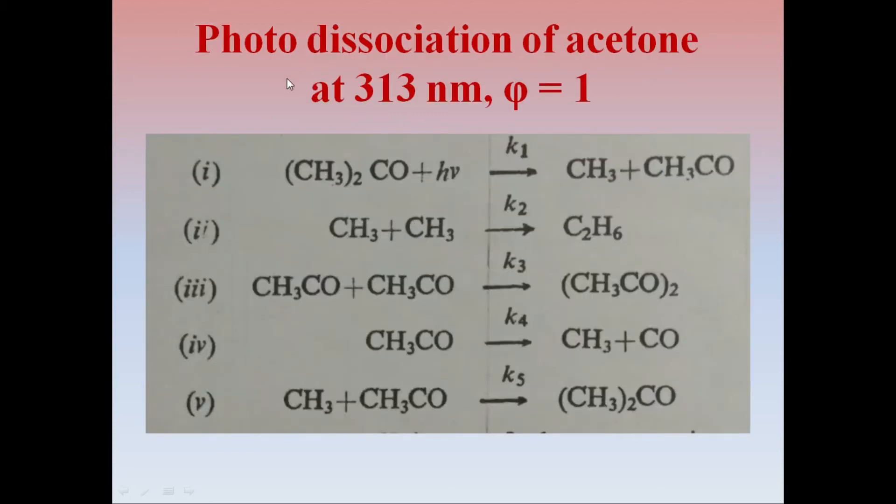Next, photodissociation of acetone at 313 nanometer shows a quantum yield of around 1. Acetone after absorbing radiation forms CH3 free radical. CH3CO free radical reacts with another CH3 free radical to form ethane. CH3CO free radicals react together to form biacetyl.